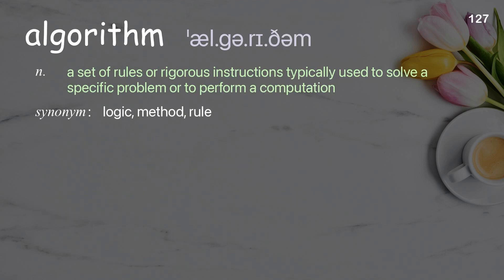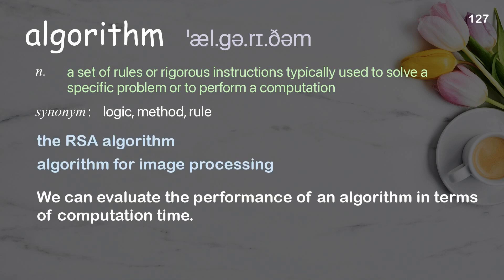Algorithm: A set of rules or rigorous instructions typically used to solve a specific problem or to perform a computation. Examples: the RSA algorithm, algorithm for image processing. We can evaluate the performance of an algorithm in terms of computation time.